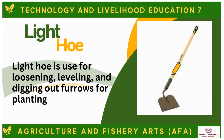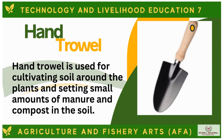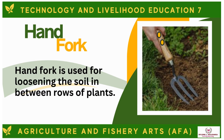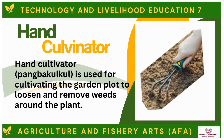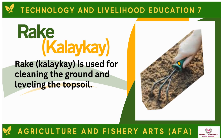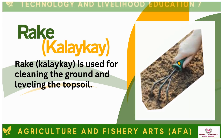The Light Hoe is used for loosening, leveling, and digging out furrows for planting. The Hand Trowel is used for cultivating soil around plants and setting small amounts of manure and compost in the soil. The Hand Fork is used for loosening the soil in between rows of plants. The Hand Cultivator is used for cultivating the garden plot to loosen and remove weeds around the plant. The Rake is used for cleaning the ground and leveling the topsoil.